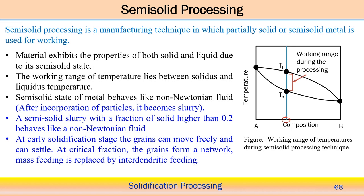The working temperature range is between the solidus and liquidus temperature for a particular material. The semi-solid component behaves like a non-Newtonian fluid — meaning the shear stress and velocity relate in non-linear fashion. Once partially solidified, we can treat it as particles available within the remaining liquid, behaving like a slurry. A semi-solid slurry with a solid fraction higher than 0.2 behaves like a non-Newtonian fluid.